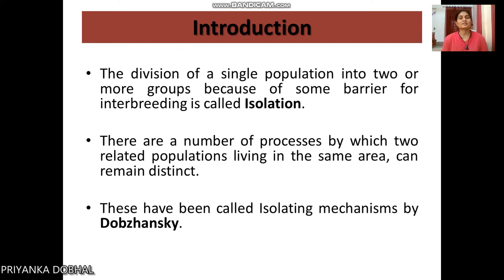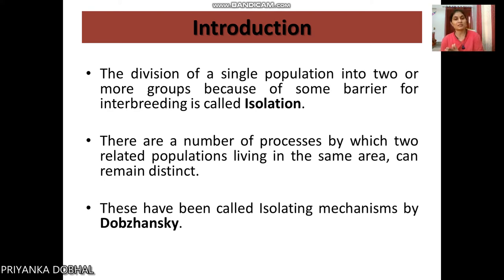So let's talk about isolation. When a particular population has two different categories within it, we call it isolation. This isolation can occur when individuals change in a particular area, or when the reproductive phenomenon of individuals changes. The mechanism behind isolation is called the isolating mechanism, first mentioned by Dobzhansky.